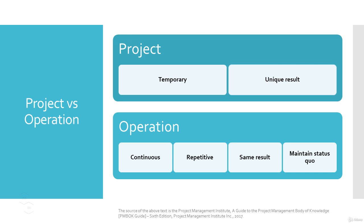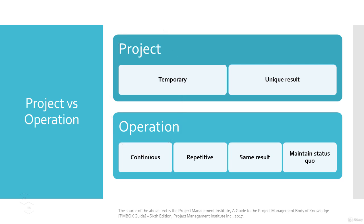For example, in the engineering and construction sector, the hiring and training of new employees and purchasing construction materials or machinery are good examples of an operation. So at this point, we have understood the concept of what is a project, what is an operation, and also the difference between project and operation.